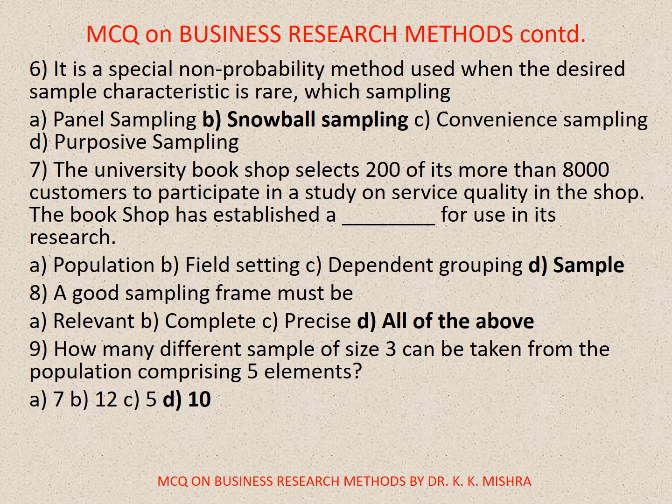Question number 6. It is a special non-probability method used when the desired sample characteristic is rare. Which sampling is this? Options are: A. Panel sampling, B. Snowball sampling, C. Convenience sampling, D. Purposive sampling. Correct option is B. Snowball sampling.